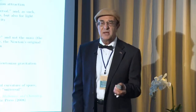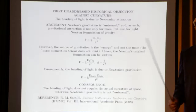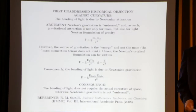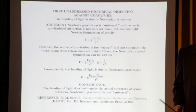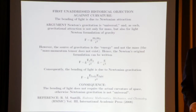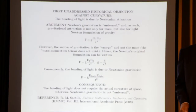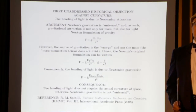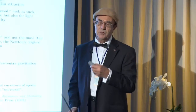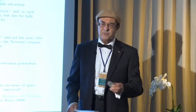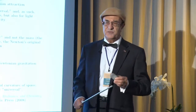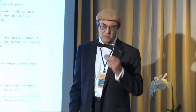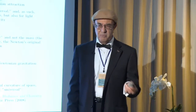Newtonian gravitation is universal — admitted by everybody to be universal. Once you admit that Newtonian gravitation is universal, you must also admit it attracts light. If for some reason the light escapes Newtonian attraction, we have to rewrite four centuries of science, since the beginning with the historical script by Newton.